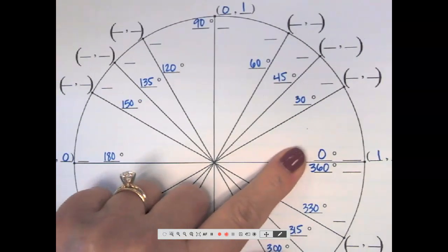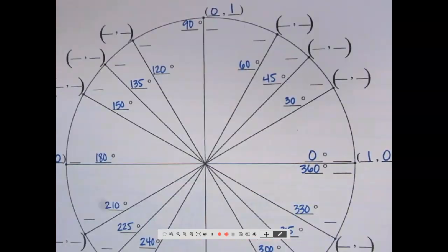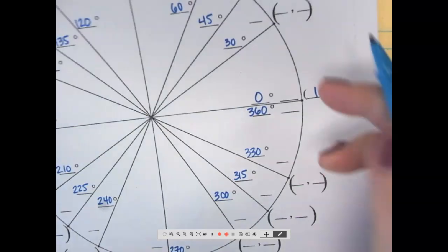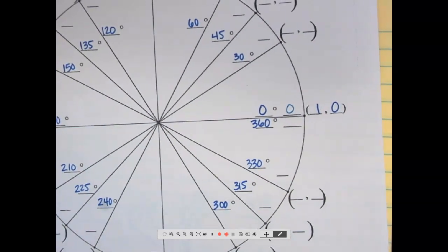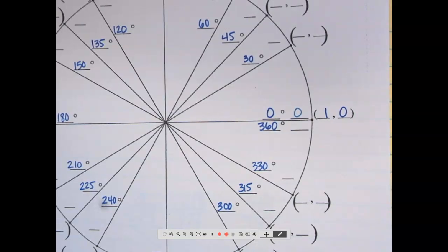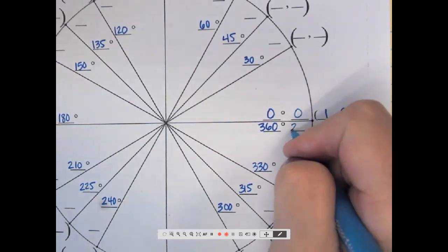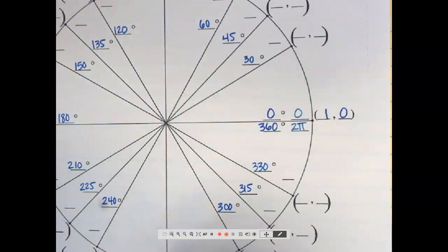How many radians is zero degrees? Zero radians. So I'm going to put zero right there. Remember radians is understood if it's not there. How many radians is all the way around the circle? Two pi. So this is also two pi.